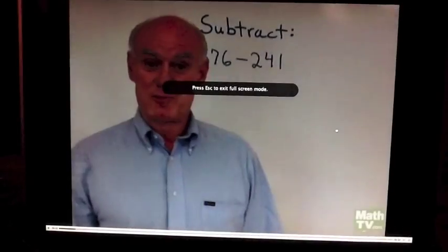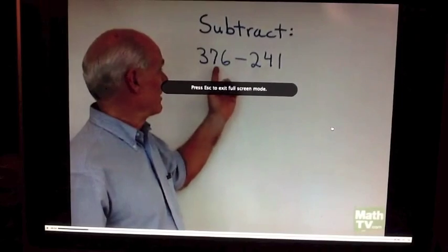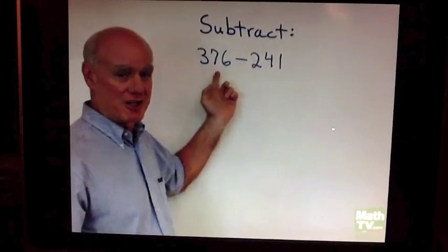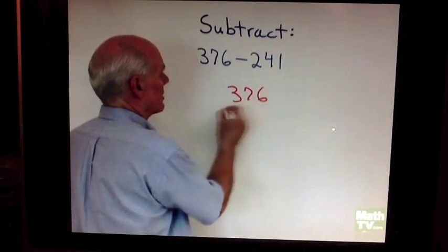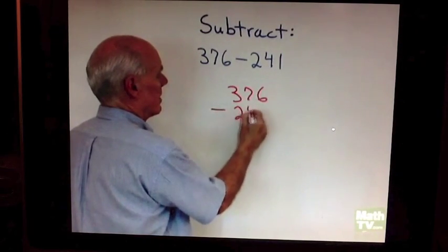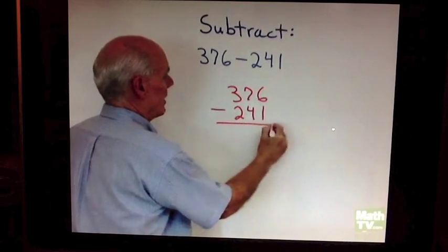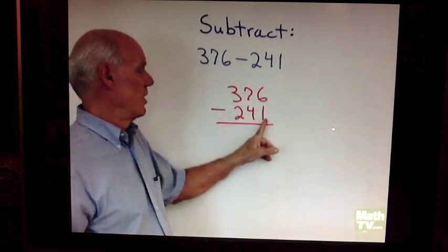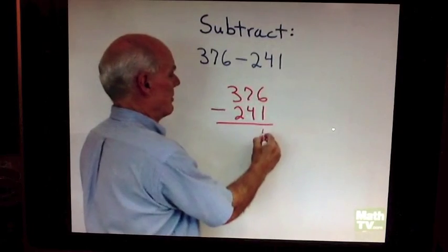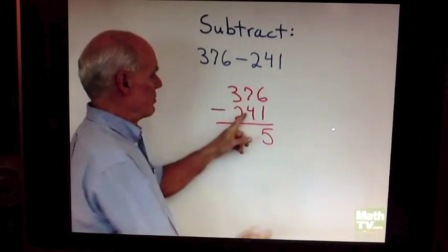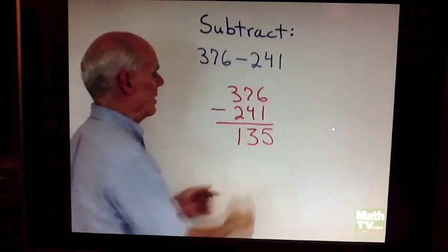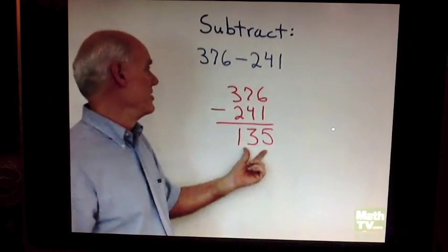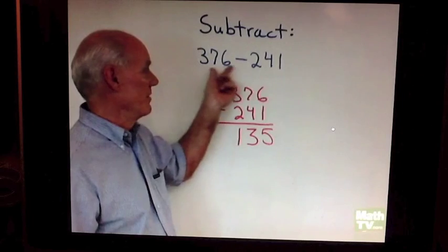Here we have a subtraction problem. We want to subtract 241 from 376 so we'll just line up the columns. Here I have 376. From that I'm going to subtract 241 and now I'll just subtract in columns. 6 subtract 1 is going to be 5, 7 subtract 4 will be 3, and then 3 subtract 2 will be 1. So 135 is the answer to 376 minus 241.